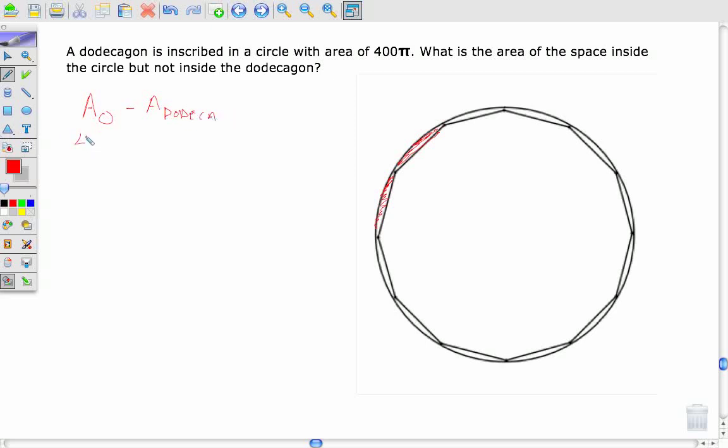Alright, the area of the circle, that's easy. That's 400π. It's the area of the dodecagon that's going to cause us a little bit more trouble. So I know the area of the circle and that's going to be useful because that's going to help me figure out the radius of my circle. So if the area is πr², then the radius of our circle is equal to 20.